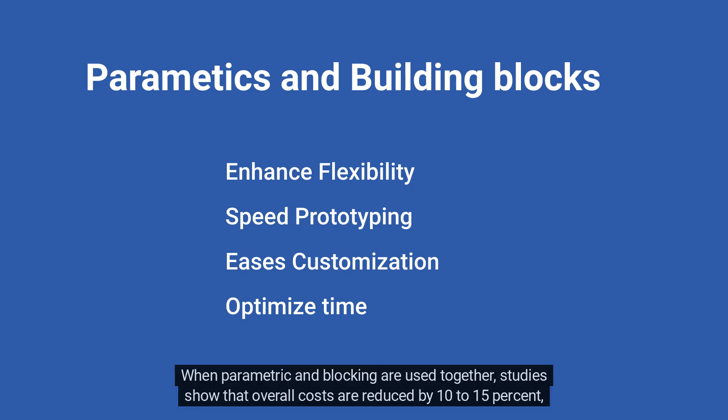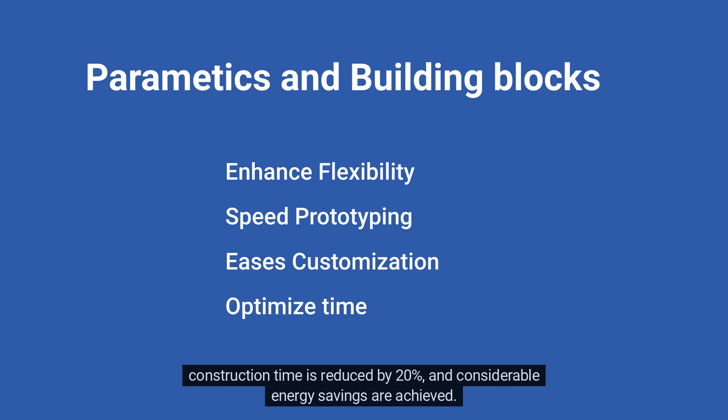When parametric and blocking are used together, studies show that overall costs are reduced by 10 to 15%, construction time is reduced by 20%, and considerable energy savings are achieved.